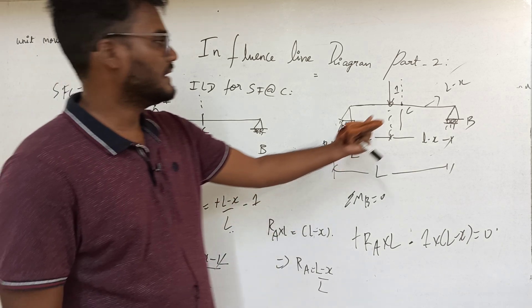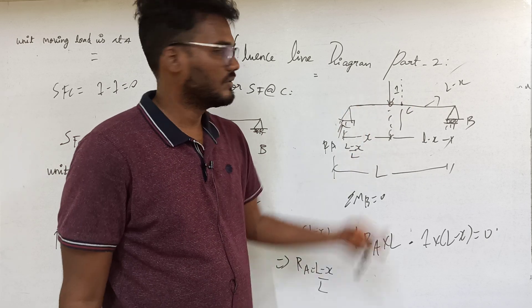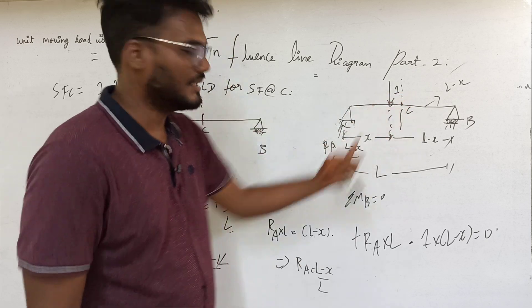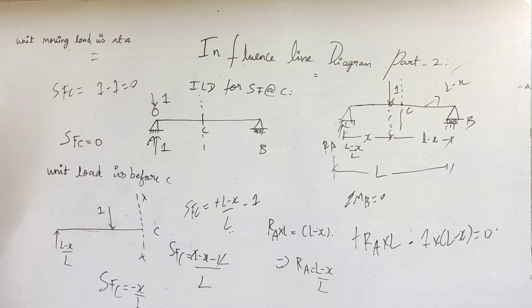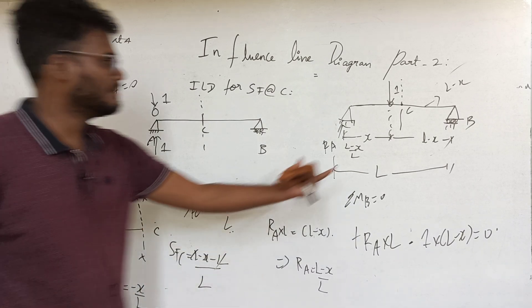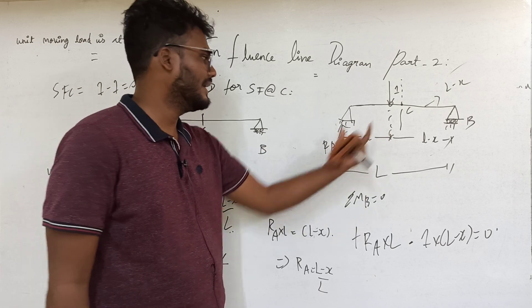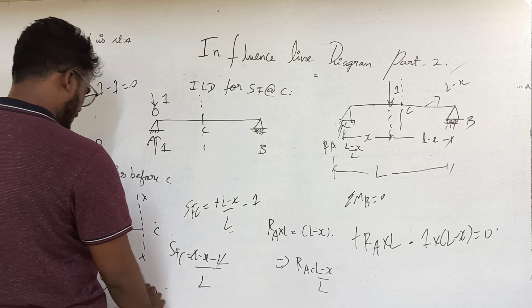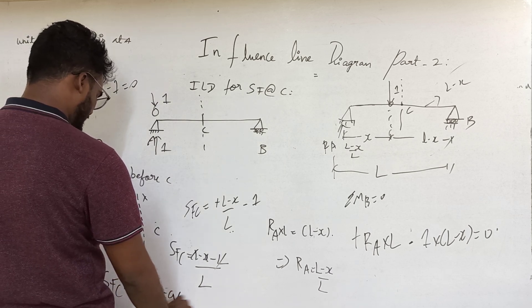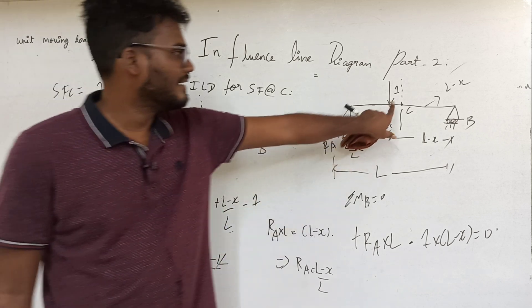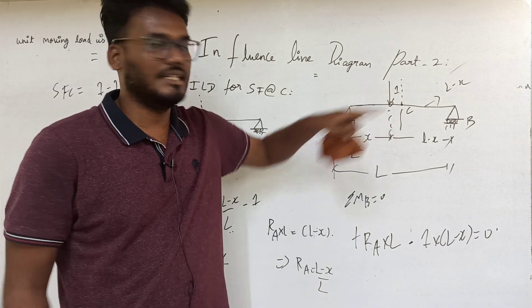When the unit moving load is before C and equals 1, the shear force at C is minus x by L or minus A by L. This is the shear force at C when the unit load is before C.